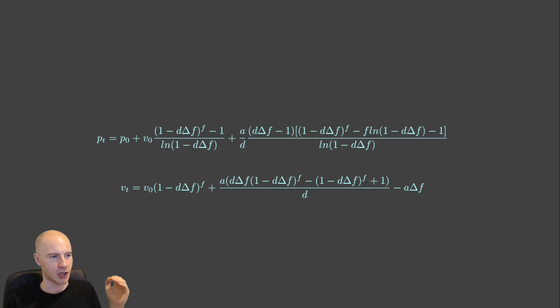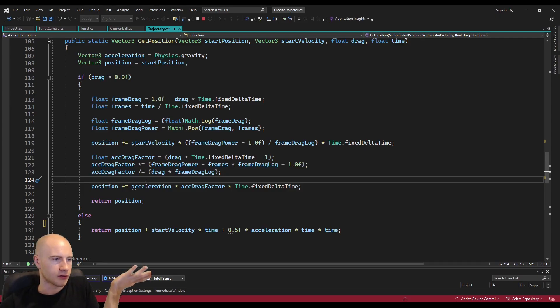So we have to do something about this but luckily we know the formula for when the drag is zero because this was the first formula we started with. So we simply check in the code is the drag zero and then use either this formula or the other one. So now the method looks like this.